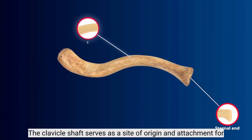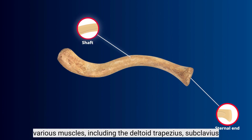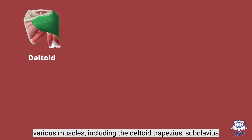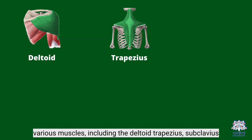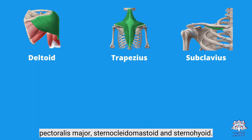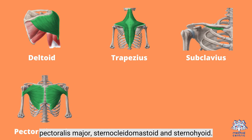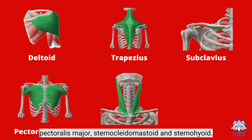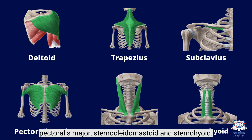Shaft. The clavicle shaft serves as a site of origin and attachment for various muscles, including the deltoid, trapezius, subclavius, pectoralis major, sternocleidomastoid, and sternohyoid.